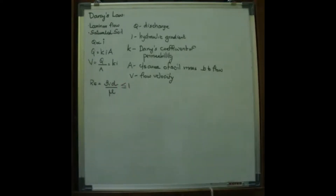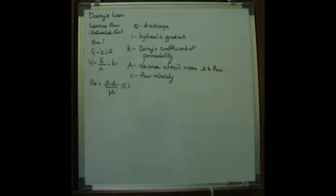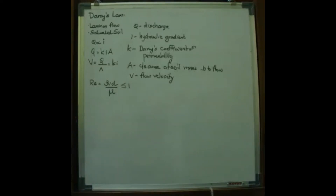Darcy's Law is valid when the Reynolds number is less than or equal to 1. For groundwater flow occurring in nature, the law is generally within its validity limits. But in raw or unconsolidated aquifers with steep hydraulic gradients, or those containing large diameter solution openings, Darcy's Law may not be applicable. Also, in the immediate vicinity of wells with steep hydraulic gradients, the law is not applicable.